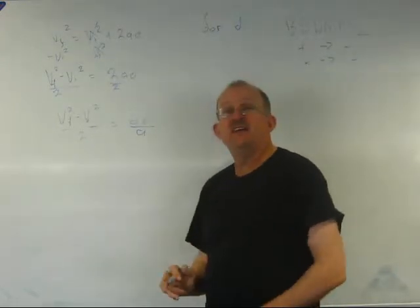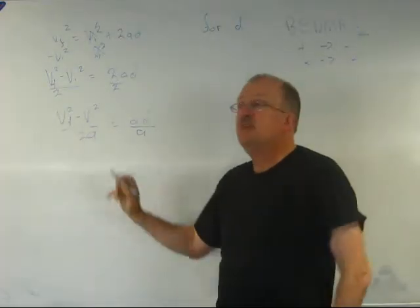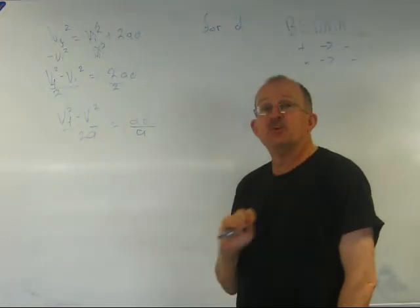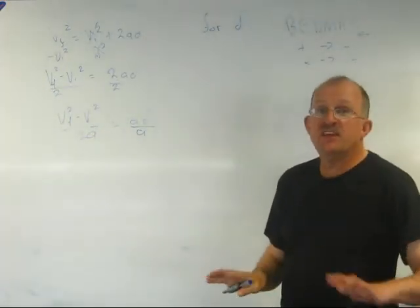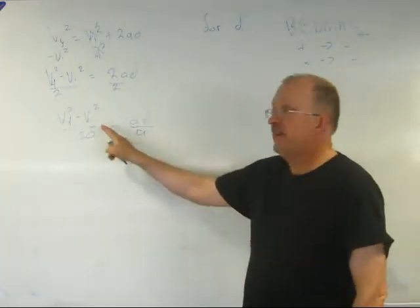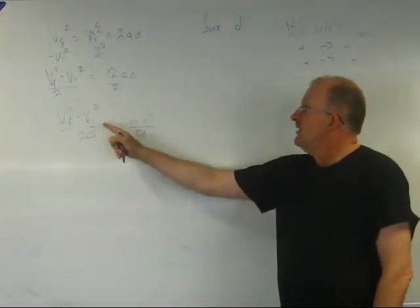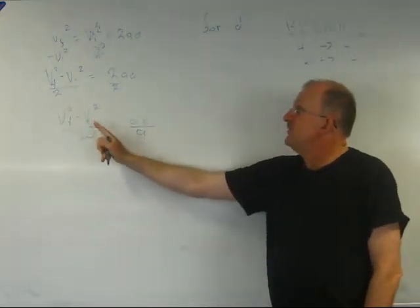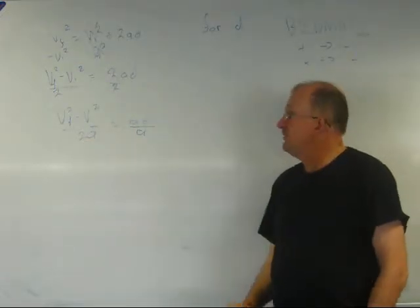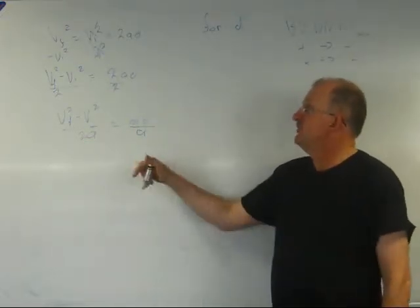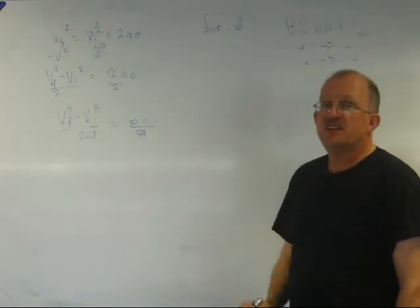And when I'm dividing this side by a, I just put it under that line that's already there. I don't add a new line. So now we get Vf squared minus Vi squared divided by 2a equals d.